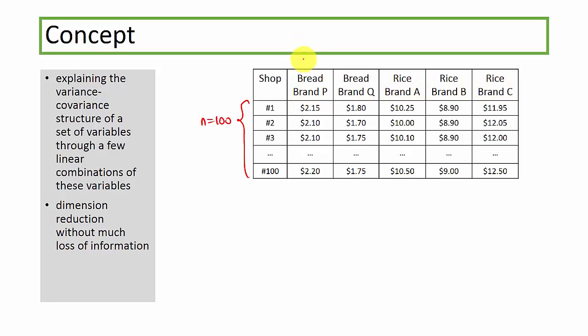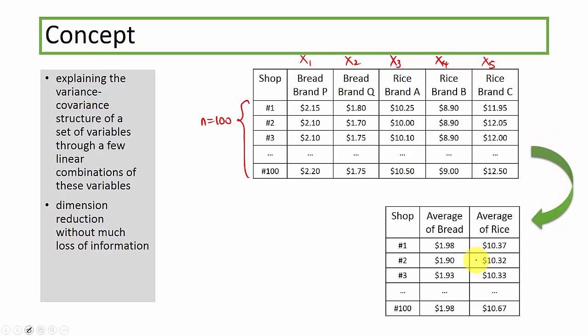Let's call these variables x1, x2, x3, x4, and x5. So x1 is the price of a bread that is brand P, all the way to x5 is the price of rice, which is brand C.